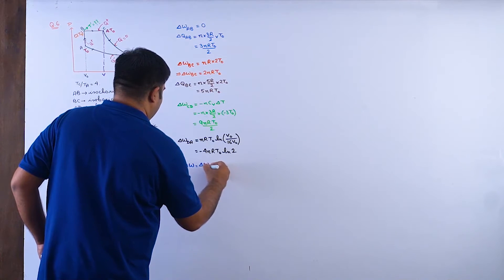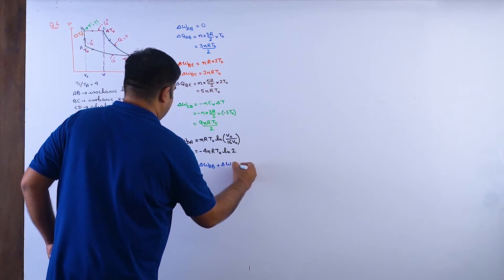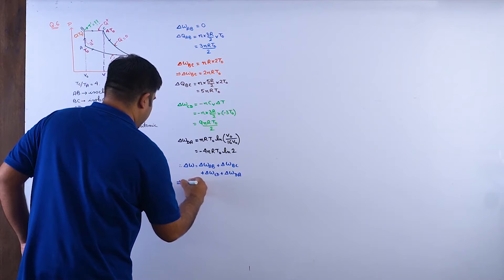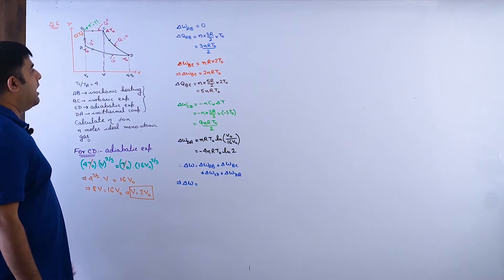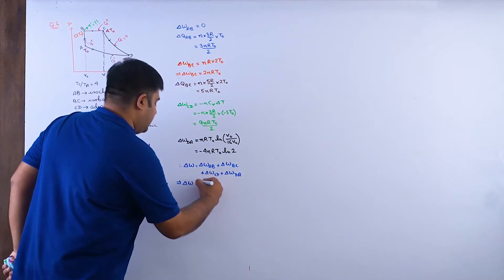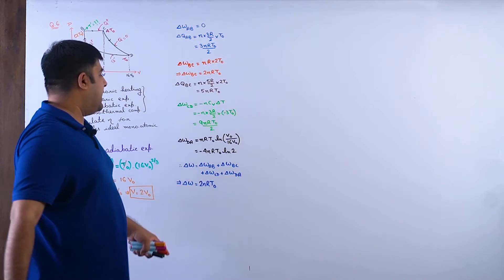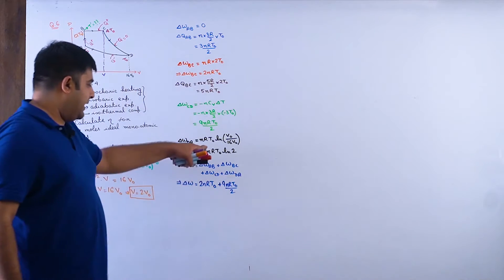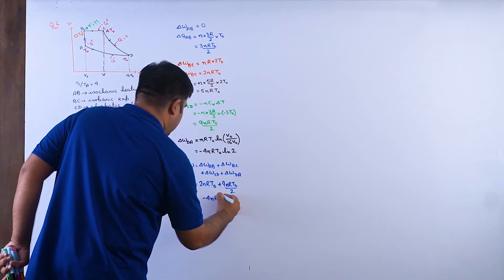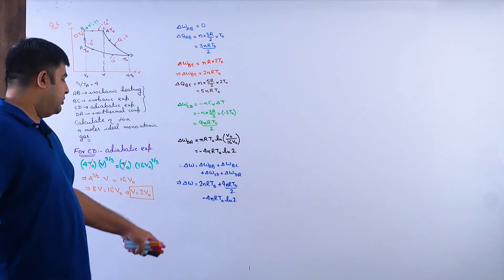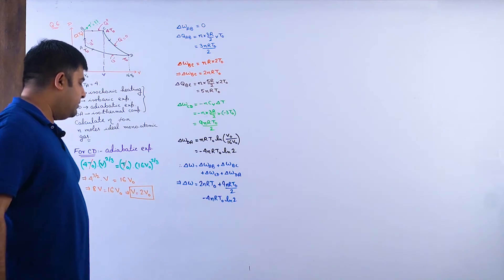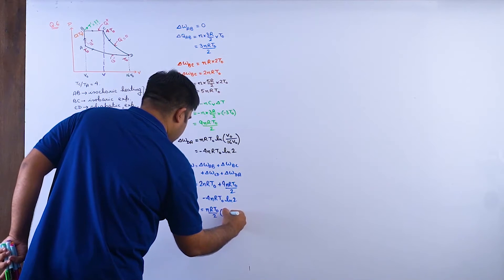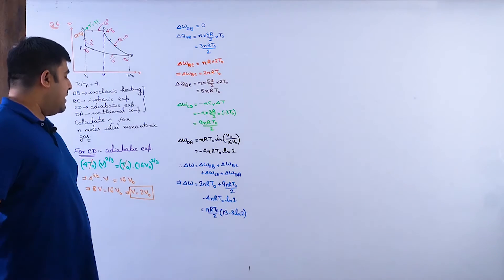Total work: W = W_AB + W_BC + W_CD + W_DA = 0 + 2nRT_not + 9nRT_not/2 − 4nRT_not·ln2. Combining: 2 + 9/2 = 4/2 + 9/2 = 13/2. So total W = (nRT_not/2)·(13 − 8ln2).